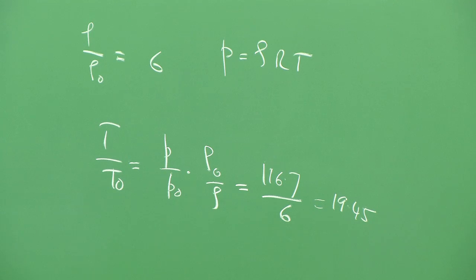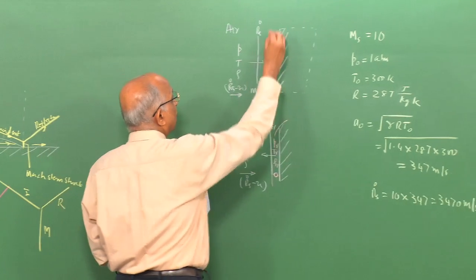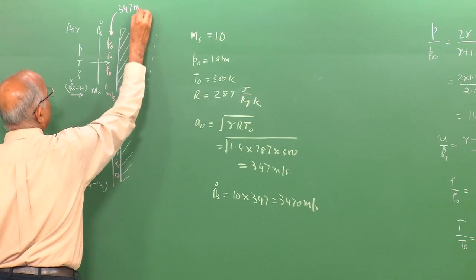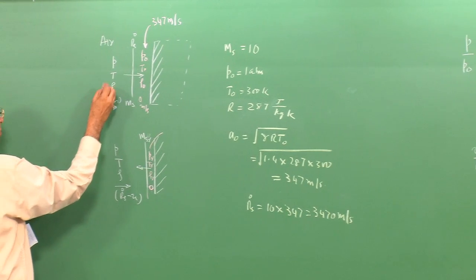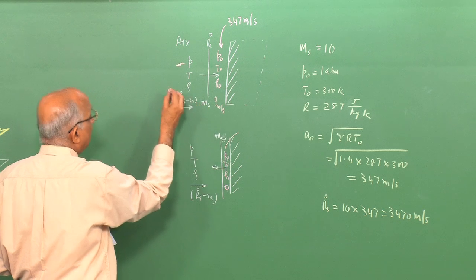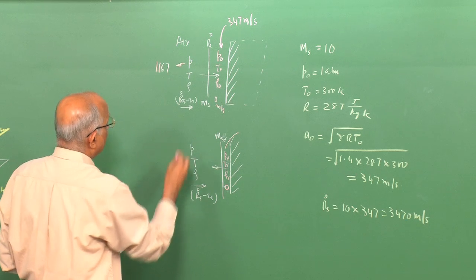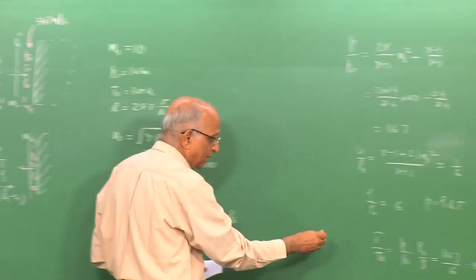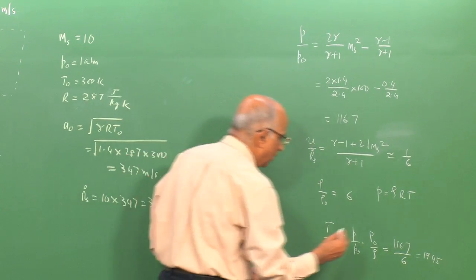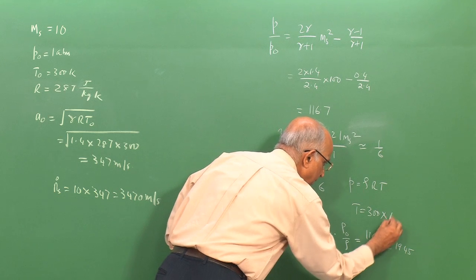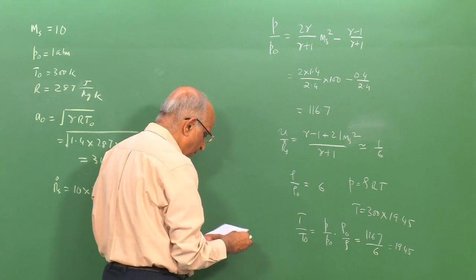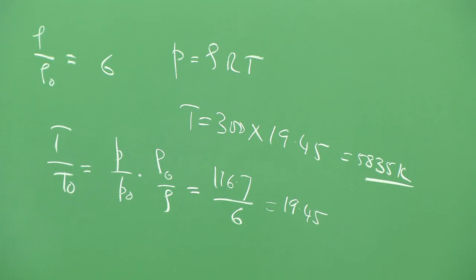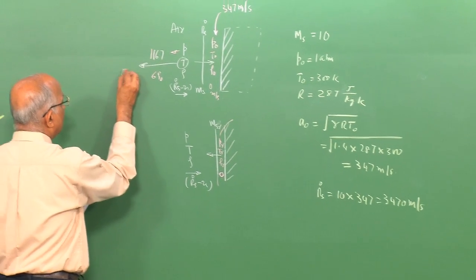Let us put these values together. The speed of sound in the undisturbed medium is 347 m/s. Behind the incident shock: pressure is 116.7 times P_0, density is 6 times ρ_0, and the temperature ratio T/T_0 = 19.45, giving T = 300 × 19.45 = 5835 K. The temperature is quite high at around 5835 Kelvin.